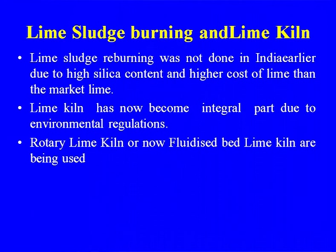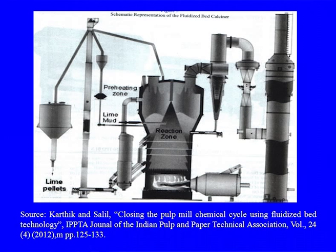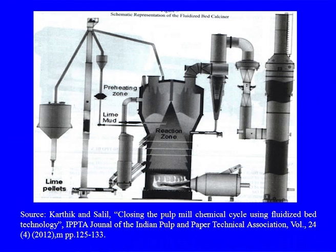For lime sludge reburning, either you can have the rotary lime kiln or the fluidized bed lime kilns now being used. In the fluidized bed lime kiln, the lime mud is preheated and goes to the fluidized bed, where some of the problems inherent in the rotary lime kiln are eliminated, and finally we are getting lime which can be reused. This is the new development taking place in lime sludge reburning; earlier it was the rotary kiln that was being used.